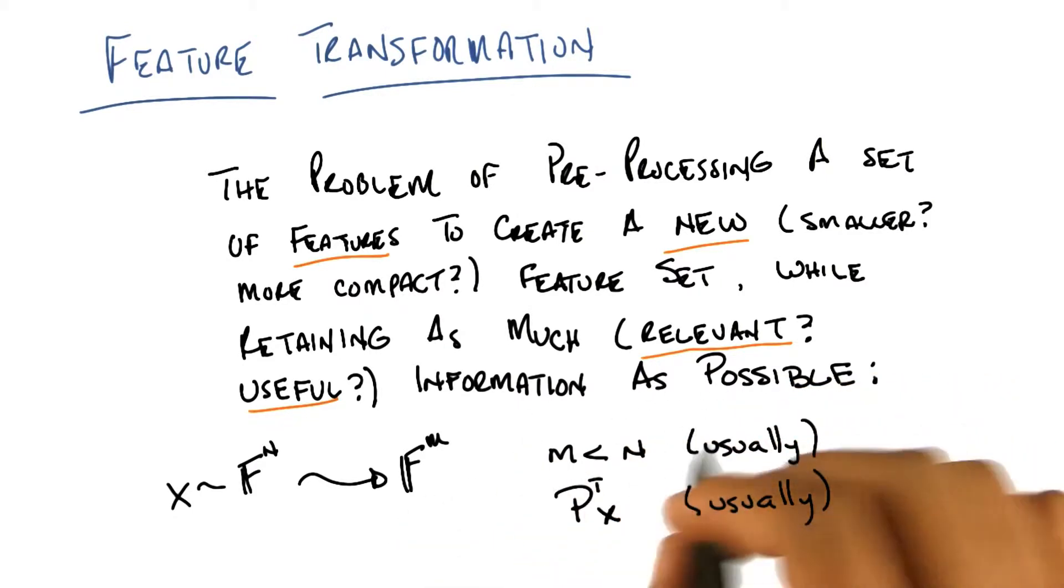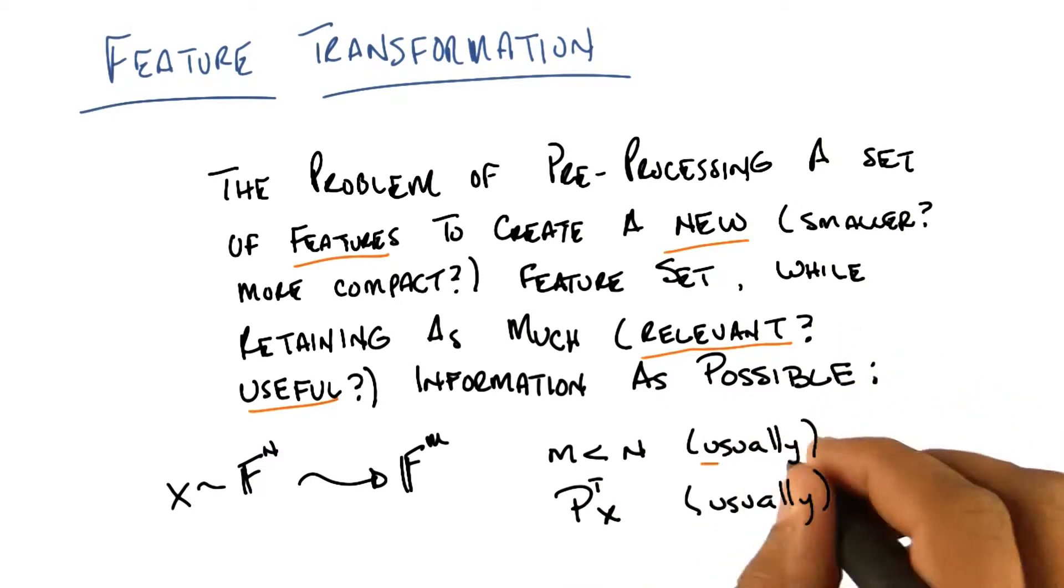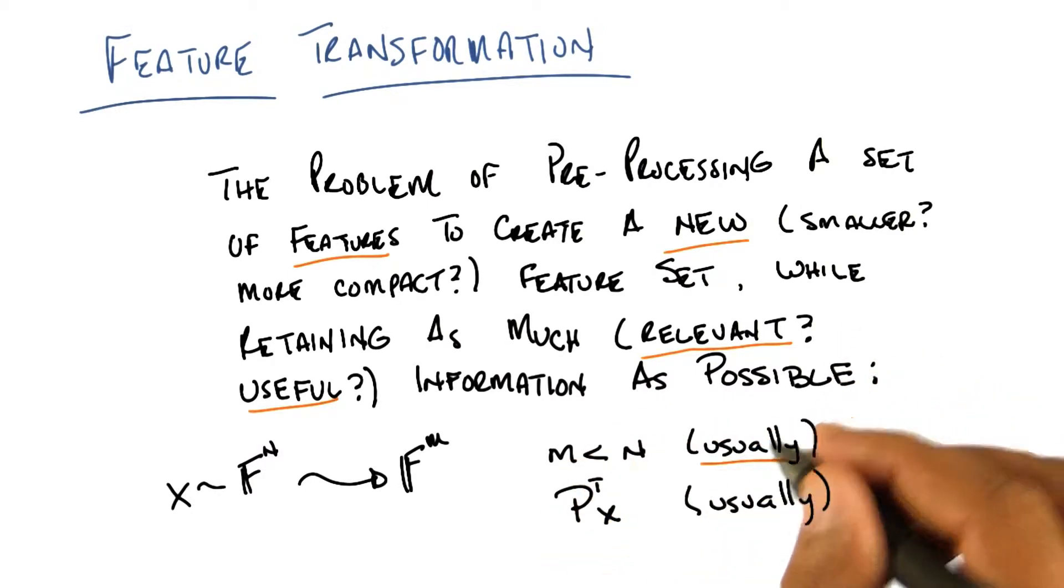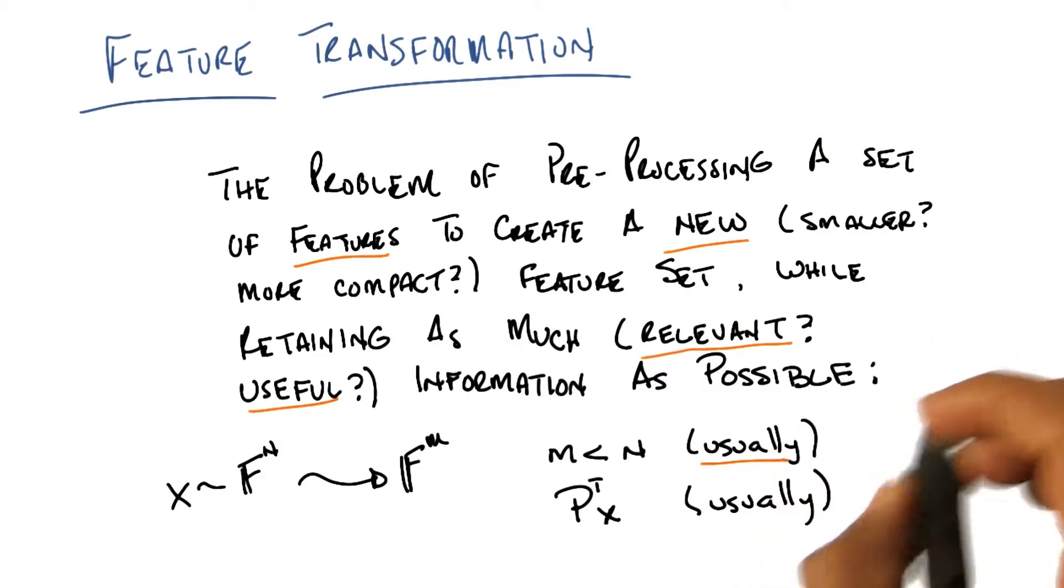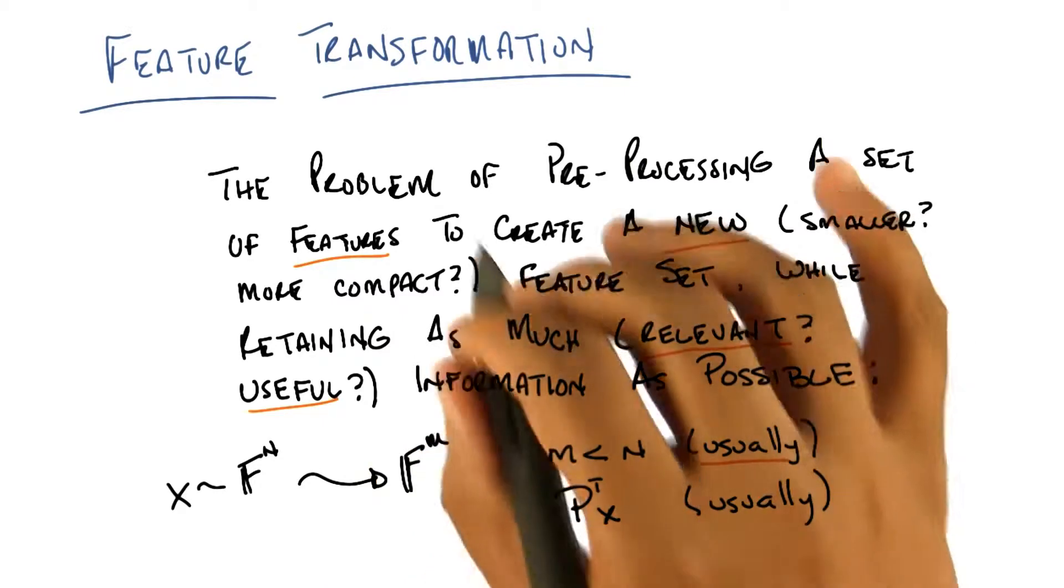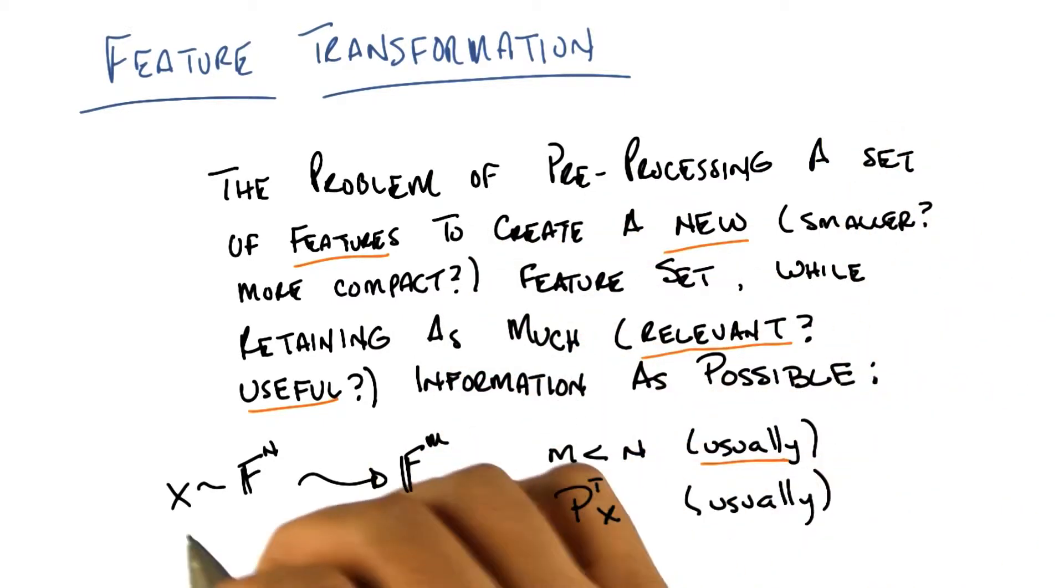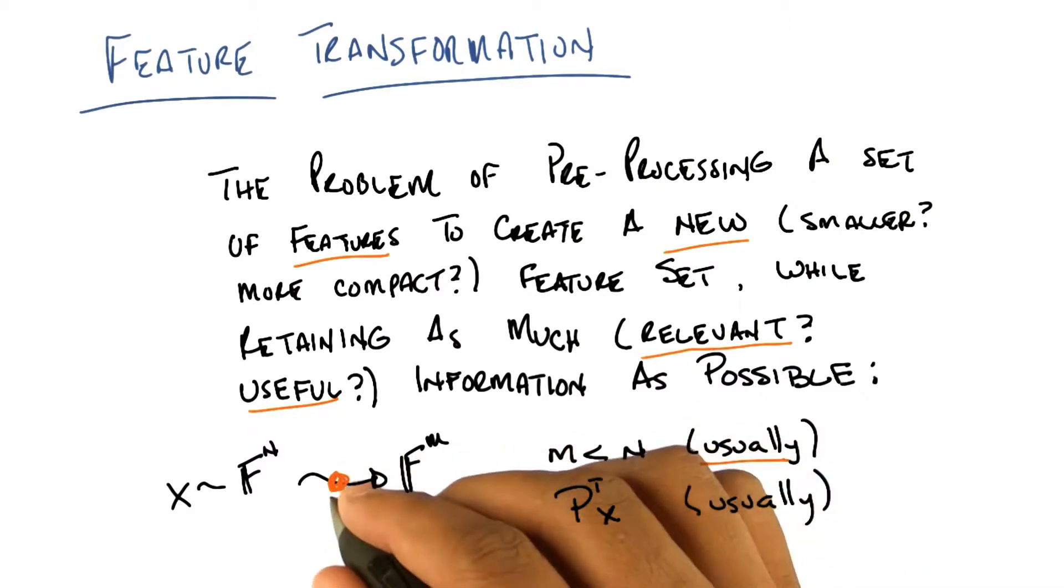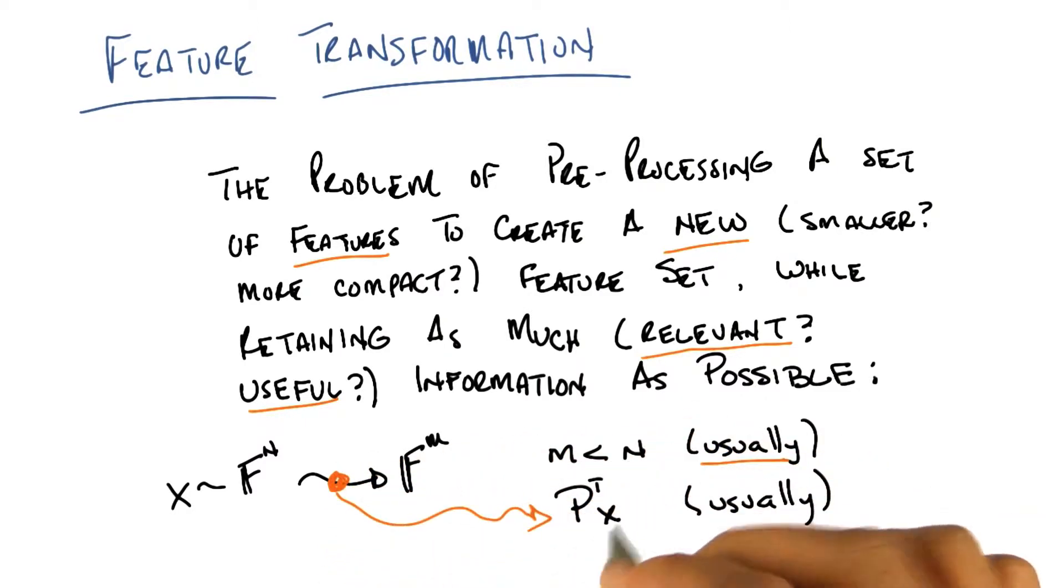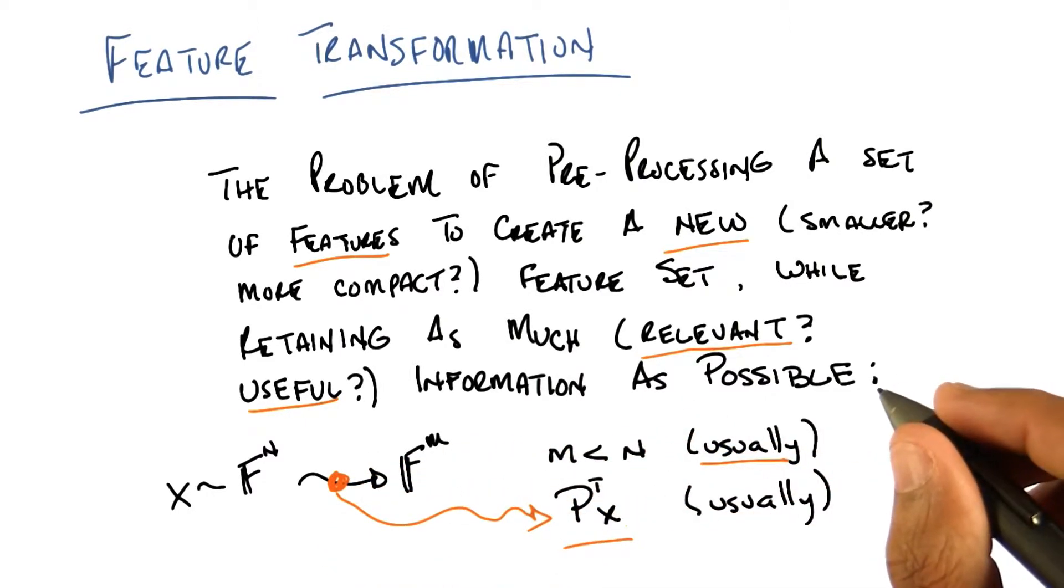And that's typically the case in feature transformation, though as we'll discuss towards the very end, it doesn't have to be. But when I say usually we expect m to be less than n, usually means almost always. And that's because of the curse of dimensionality problem. But the difference between what we were doing with feature selection and feature transformation, because this is exactly what I wrote before, is that this transformation operator is usually something like this, a linear transformation operator.